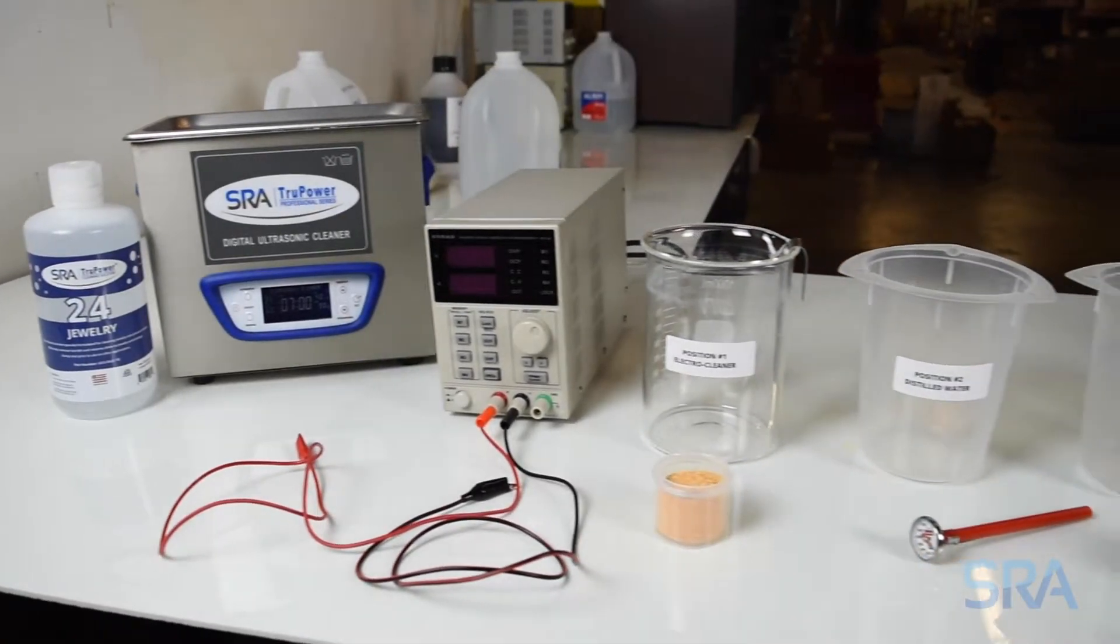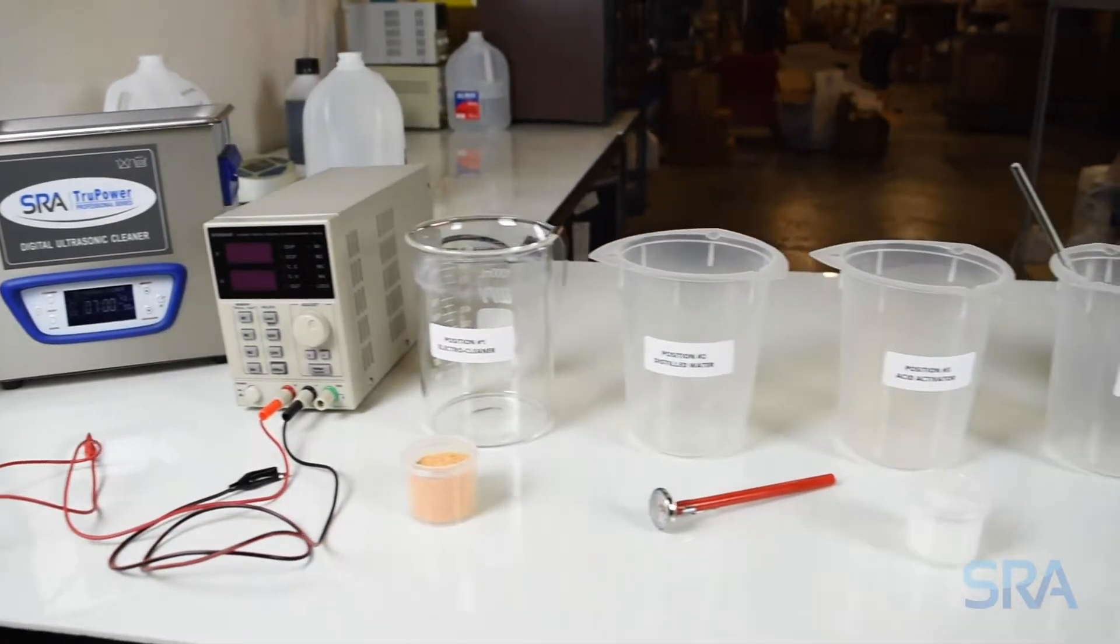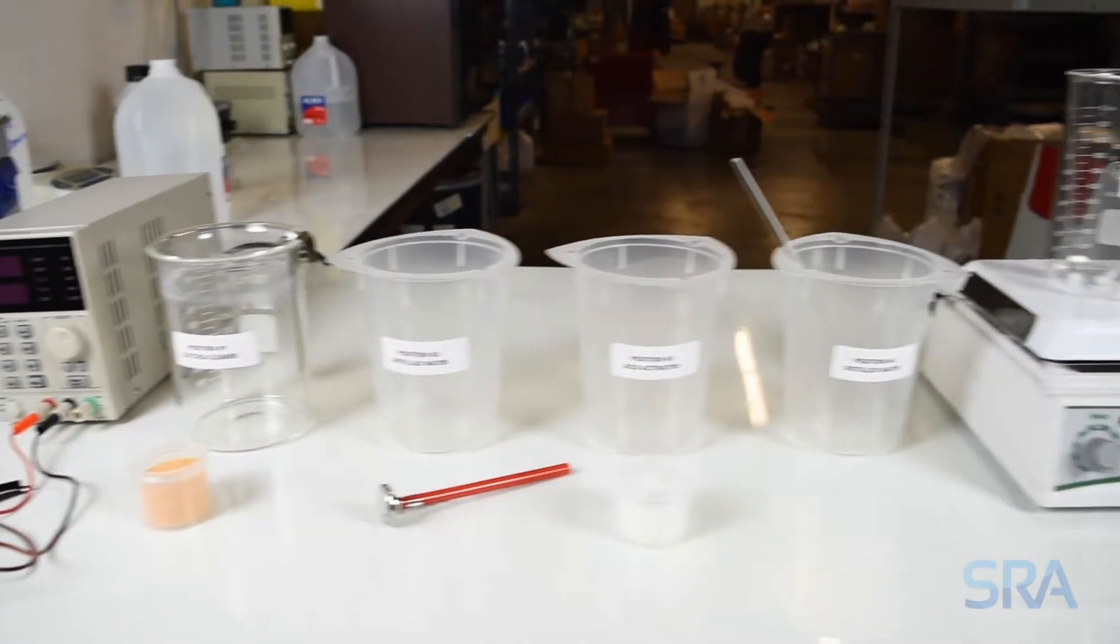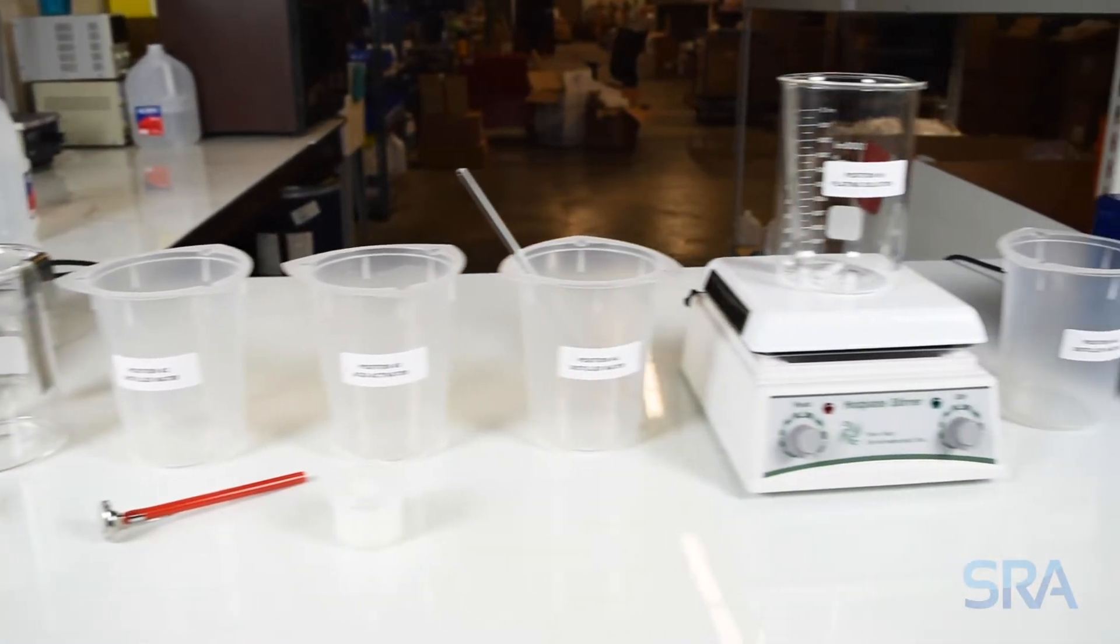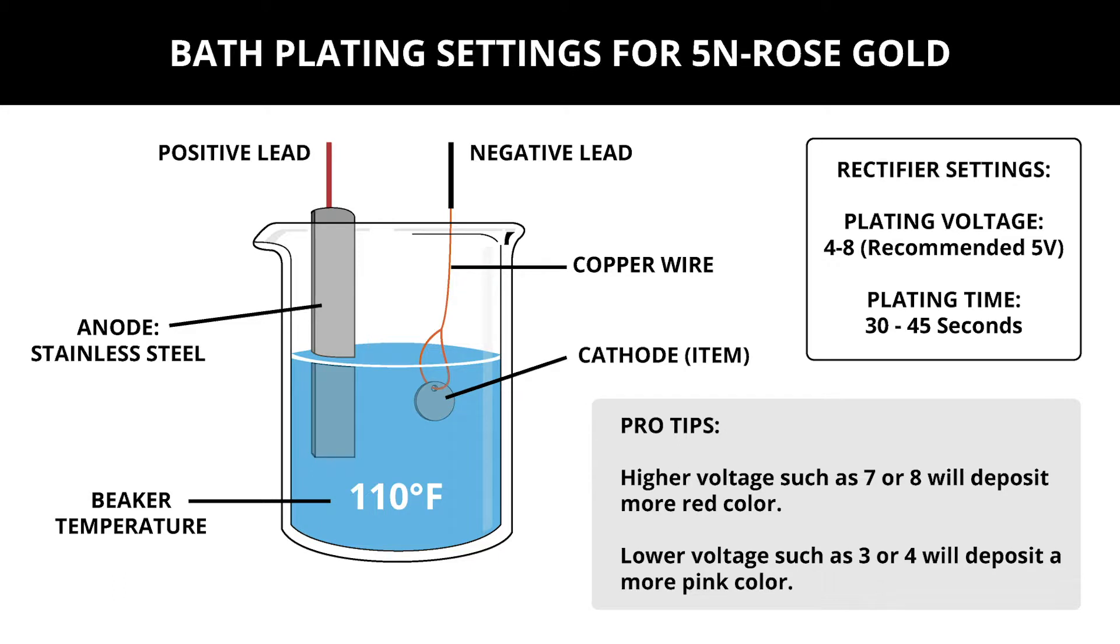In the previous video we went over how to properly set up your work area for plating. Let's now go over the recommended settings for 5N rose gold. Your plating beaker should be heated to 110 degrees Fahrenheit.